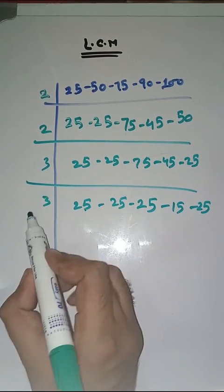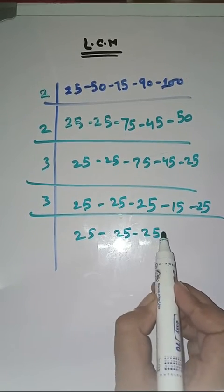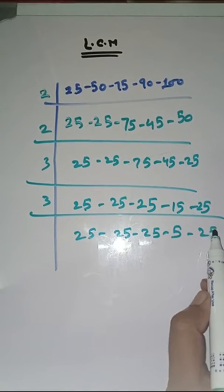Again with 3. 25 as it is, 3 5's are 15, 25 as it is.